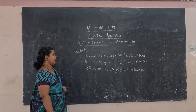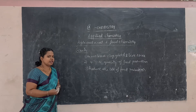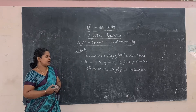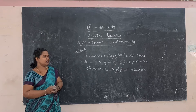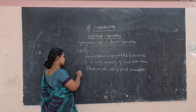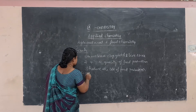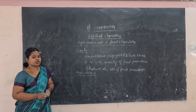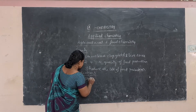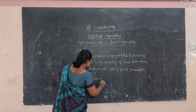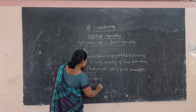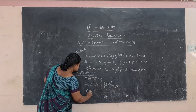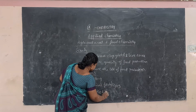The applications of agricultural chemistry include soil testing, chemical fertilizers, and pesticides and insecticides. These three areas help us understand how to apply chemistry effectively in agriculture.